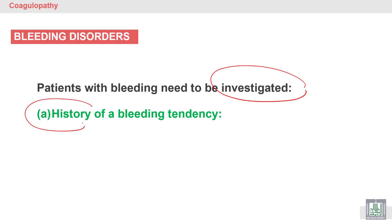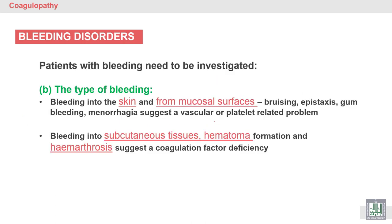When investigating a bleeding disorder, the first step is history — history of bleeding tendency. We need to determine the type of bleeding and where it is coming from: the skin, the mucosal surface. This includes bruising, collection of blood under the skin, nosebleeds, gum bleeding, or menorrhagia — excessive blood loss during the monthly period.